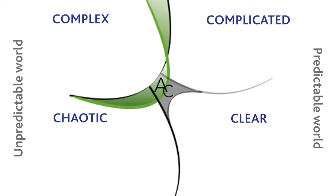Deciding where to move an issue out of this domain into one of the other four domains will often depend on your personal preference and history. For example, administrators may tend to assess most problems as process failures, whereas professionals and specialists may assume there was not enough time to do the investigation or the analysis. Cognitive science suggests that rather than starting with a clear head, we assess a situation based on how we've already decided to act. With this in mind, it's a good idea to be aware of your pattern biases and pause before moving out of aware and confused to be sure you're moving into the right domain.